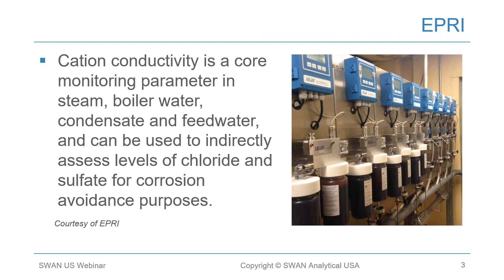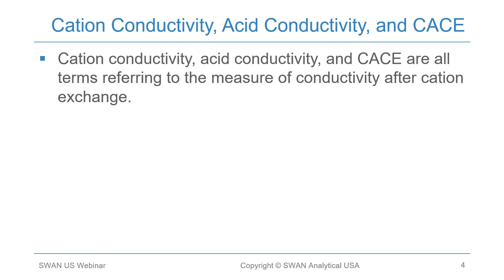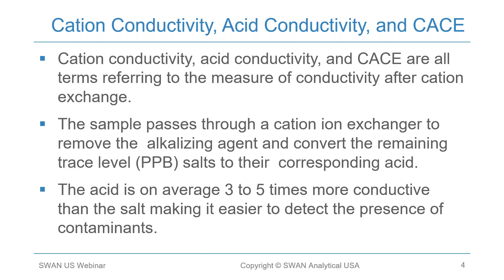Good morning everyone. We're very excited to have you join us for this webinar. We're going to be discussing a better way to measure cation conductivity. According to EPRI, cation conductivity is a core monitoring parameter for steam, boiler water, condensate, and feed water, and can be used to indirectly assess the levels of chlorides and sulfates present for corrosion avoidance purposes. Cation conductivity, acid conductivity, and CACE are all terms referring to the measurement of conductivity after cation exchange. The sample passes through a cation ion exchanger to remove the alkalizing agent and convert the remaining trace PPB-level salts to their corresponding acid, which is on average three to five times more conductive than the salt, making it much easier to detect the presence of contaminants.